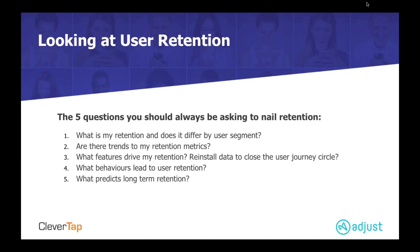Looking at user retention, there are five key questions to ask. First: what is my retention and does it differ by user segment? It's really important to understand your average retention rate. When you break users down into specific cohorts, you can find exactly when they give up on your app and start to identify what's making them leave. The easiest way is to measure retention using acquisition cohorts — look at when users come into your app within a 30-day, 15-day, or 7-day period and figure out when the drop-off actually happens.